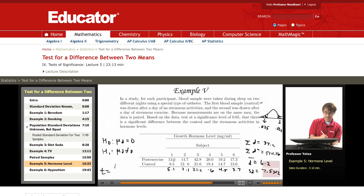My t is simply going to be 6.2 divided by my standard deviation, which is 7.5302, divided by the square root of 6. This gives me a t of 2.017.